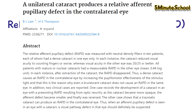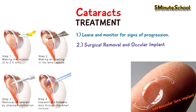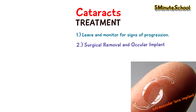The treatment for cataracts, if not causing any major problems, is to leave and monitor for any signs of progression. If it is causing problems, surgical removal and an ocular lens implant is the main protocol for treatment. Most patients end up with phacoemulsification, which is a modern cataract surgery method in which the eye's internal lens is emulsified with an ultrasonic handpiece and aspirated from the eye, along with an IOL implant.